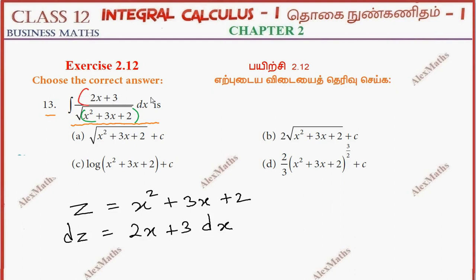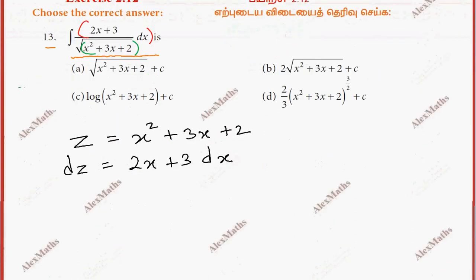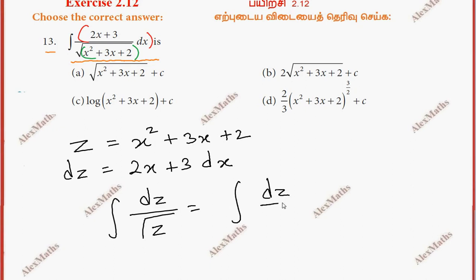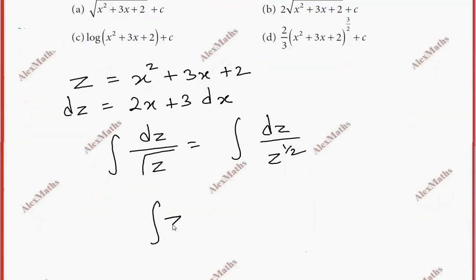So we replace in the question. The integral becomes dz by root z. Root z is z power half, so the numerator gives us z power minus half into dz.